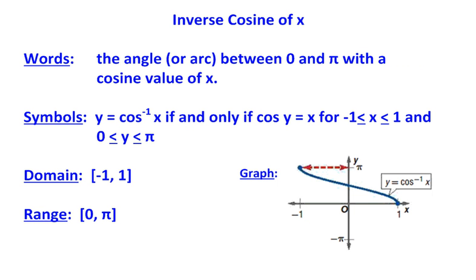Moving on to inverse cosine. This is the angle or arc between 0 and π/2 with a cosine value of x. You can see that the domain is [-1, 1]. The range is 0 to π. And you see the graph of this function as well.